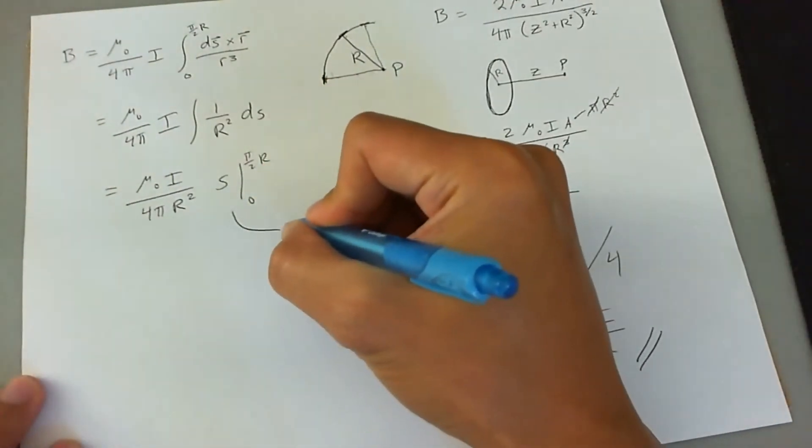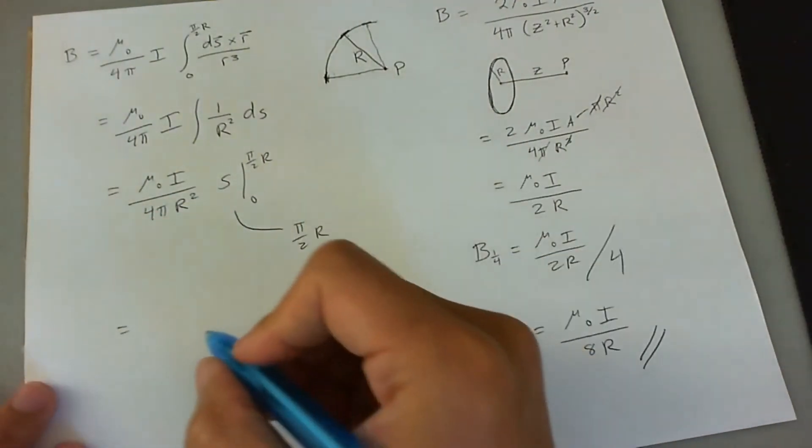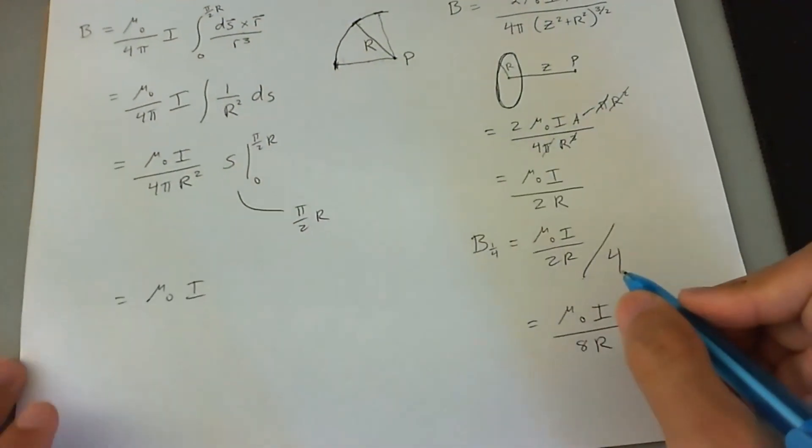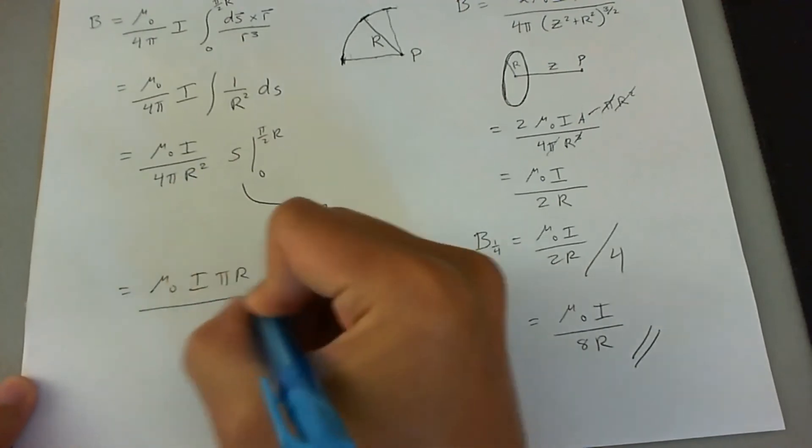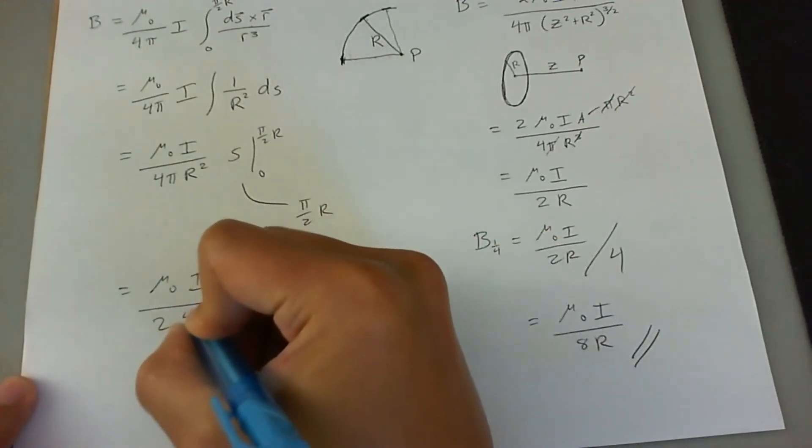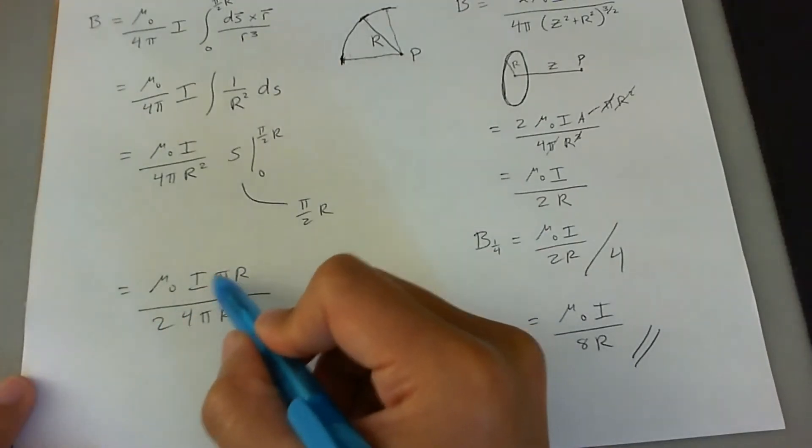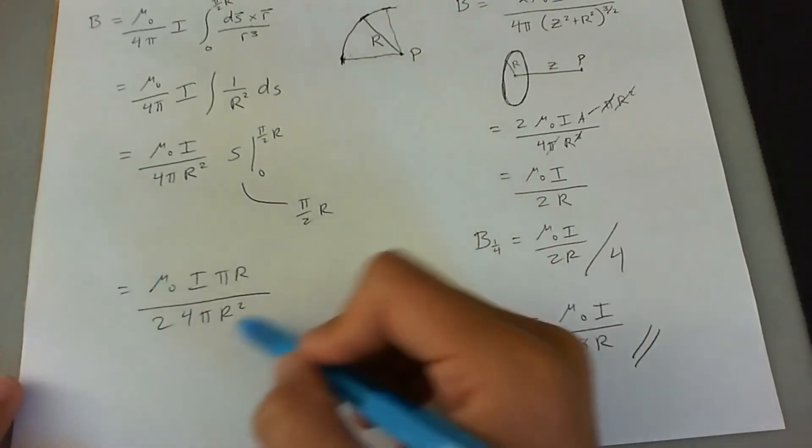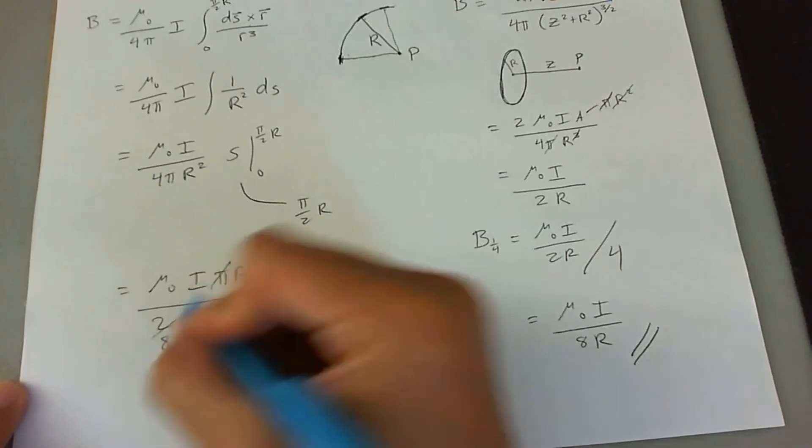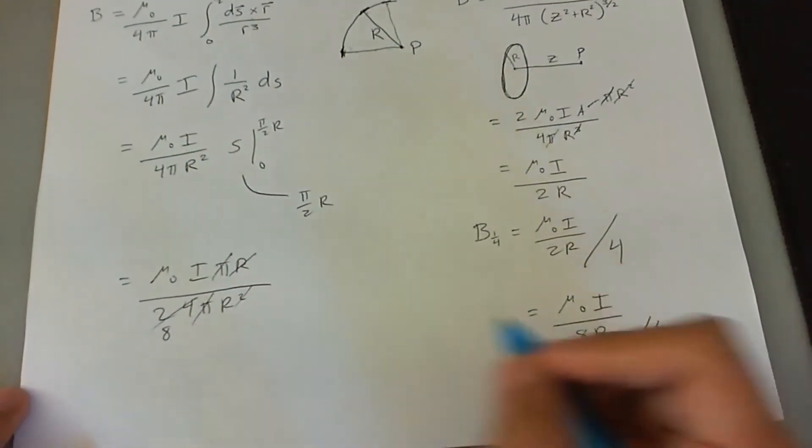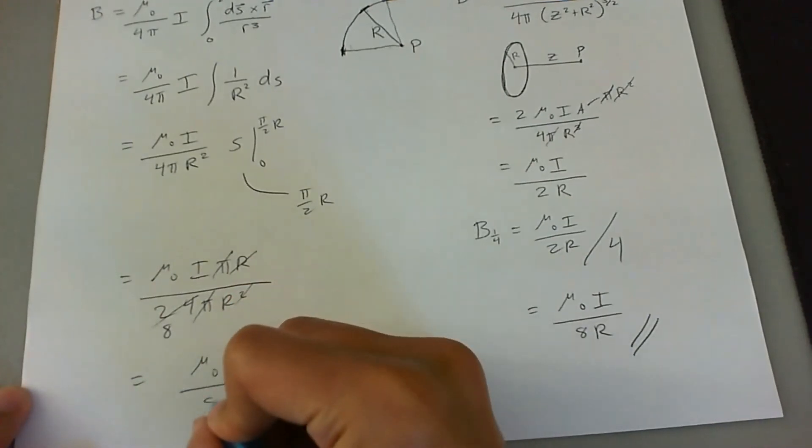This becomes pi over two times R. This whole B field then becomes mu naught i times pi R over two, and then four pi R squared comes out on the bottom. This whole pi over two times R is separated between all these other variables. Pi's cancel out, two times four becomes eight, and then this R cancels out with the square of that, so this ends up being mu naught i over eight R.